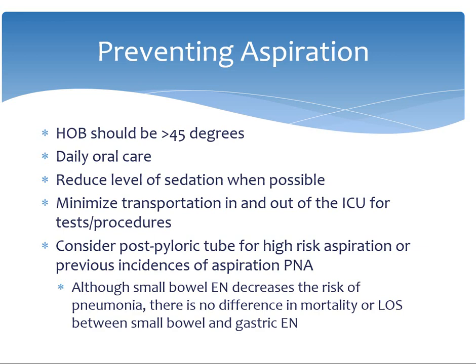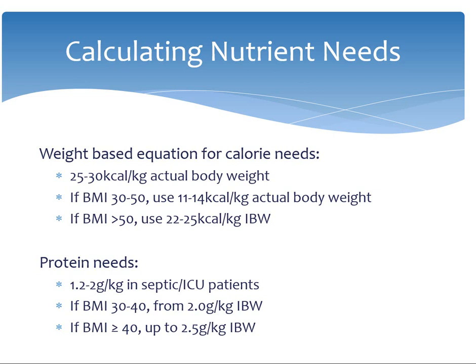This next slide explains how dietitians calculate nutritional needs for patients. We use weight-based calculations here at Loyola using the range of 25 to 30 calories per kilogram of actual body weight in the normal BMI range. It is recommended to hypocalorically feed the overweight and obese while providing elevated protein. The range of 20 to 25 calories per kilogram of actual body weight is used for an overweight BMI between 25 and 29; 11 to 14 calories per kilogram for BMI 30 to 50; and 22 to 25 calories per kilogram of ideal body weight for BMI over 50. This helps promote weight loss for the overweight and obese while preserving lean muscle mass.